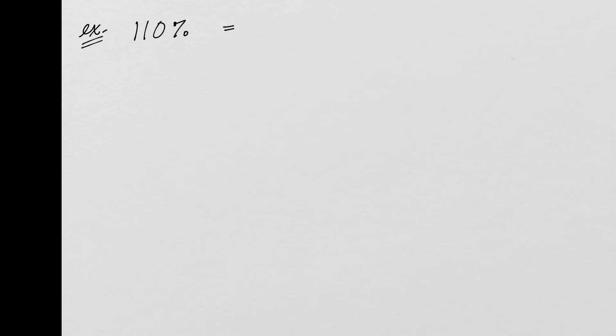What if I have 110%? I want to convert that into a fraction. Well, this means 110 over 100. You always put it over 100 and remove the percent symbol. If you simplify, you can take out a factor of 10, so this is just 11/10. Or if you want it in mixed number form, you can divide to get 1 and 1/10.